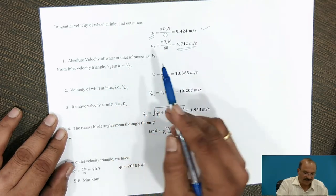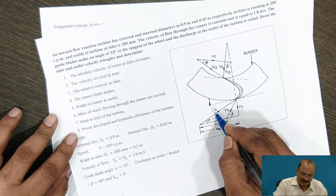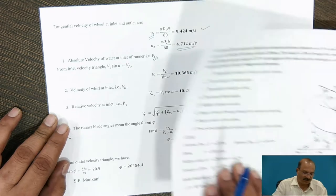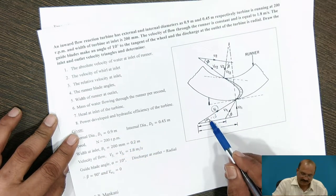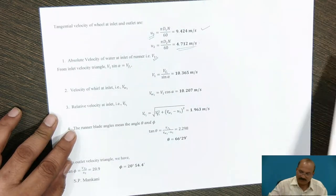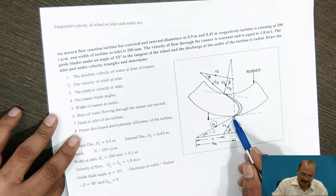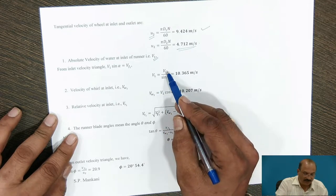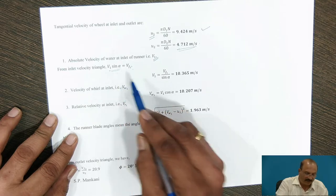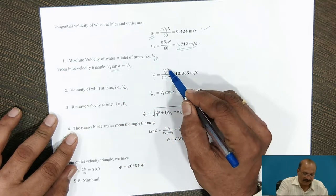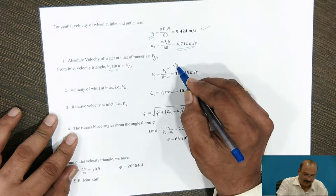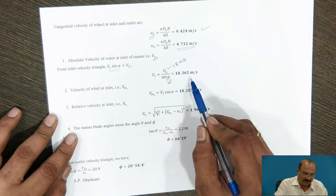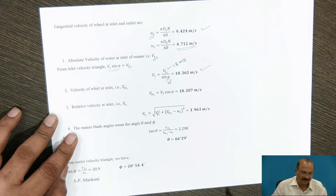For the absolute velocity of water at inlet V1, from the inlet velocity triangle, V1 sin(alpha) = Vf1. Therefore V1 = Vf1 / sin(alpha). Substituting Vf1 = 1.8 m/s and alpha = 10 degrees, we get V1 = 10.365 m/s.